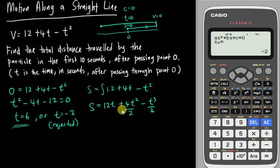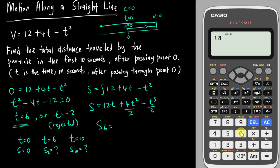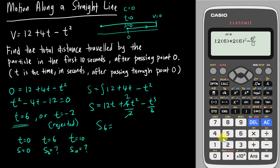If you want to do it manually, we know when t equals 0 the particle is at the origin. I want to find where the particle is when t equals 6. Substituting into the displacement equation: 12 times 6 plus 2 times 6 squared minus 6 cubed over 3, I get s equals 72 meters.